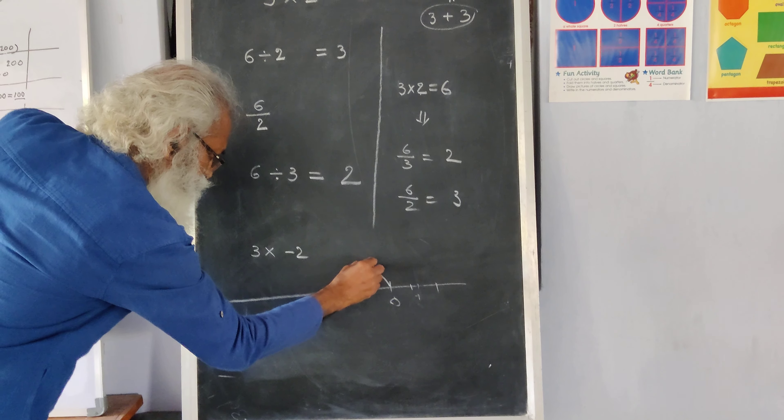Then another minus 2. Another one, another 2. So the second jump is here. That is another minus 2.